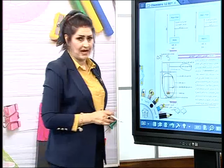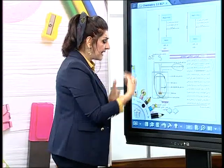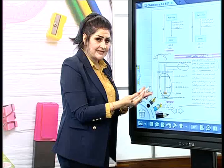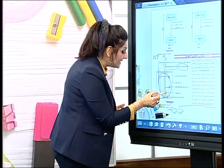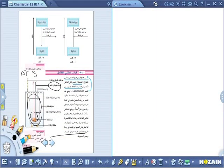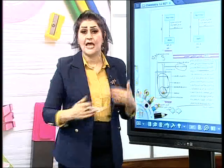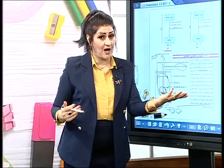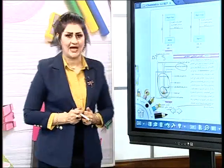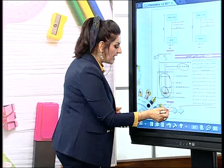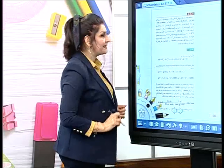إذن هذا هو نظام المسعر. أريد أن أقيس كمية الحرارة لعدد مولات معينة من المادة المحترقة. تحت ضغط ثابت، إذا أردتها لمول واحد سنحسبها. سنأخذ طلبتنا سؤالاً - لكن لن نأخذ سؤال الكتاب، سنأخذ التمرين وننتبه على معطياته.